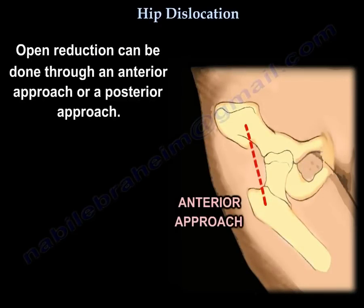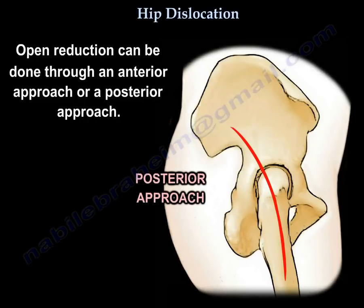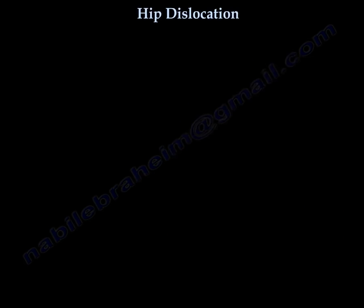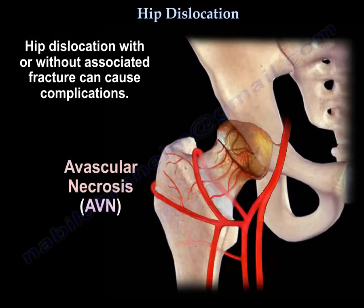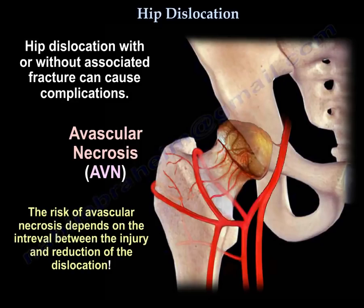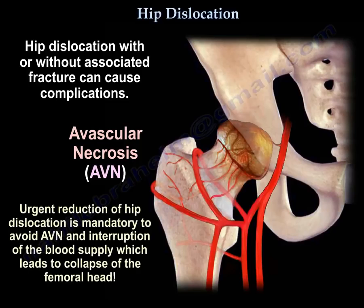Open reduction can be done through an anterior or posterior approach. Hip dislocation, with or without associated fracture, can cause complications such as avascular necrosis. The risk of avascular necrosis depends on the interval between the injury and reduction of the dislocation. Urgent reduction of hip dislocation is mandatory to avoid avascular necrosis and interruption of the blood supply, which leads to collapse of the femoral head.